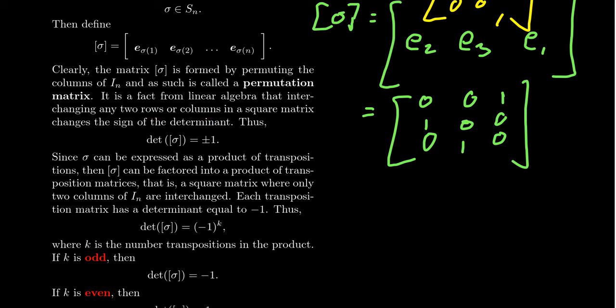The determinant of the identity matrix is one, since it's diagonal with ones along the diagonal. So if we start permuting columns of the identity — which is what a permutation matrix does — the determinant of the permutation matrix has to be plus or minus one. This dichotomy is what we'll use to show that permutations have either an odd or even transposition factorization.